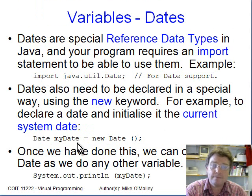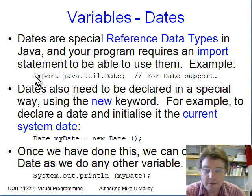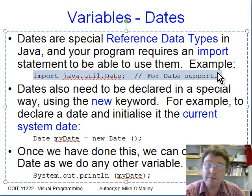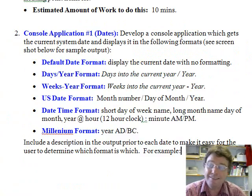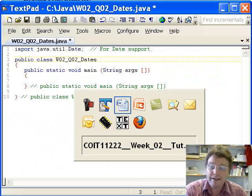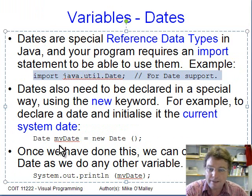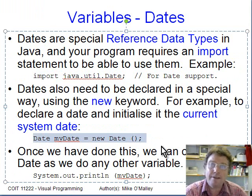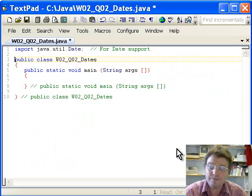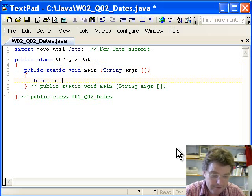We need the import to work with dates, so we copy and paste that in — there's our import. We'll also grab that next line of code. Now we have a date to work with — today's date is set to the current system date and time.